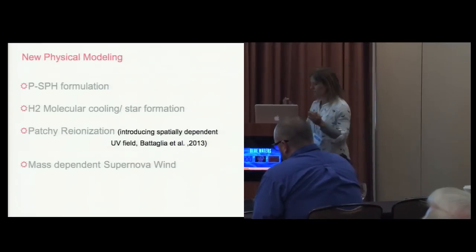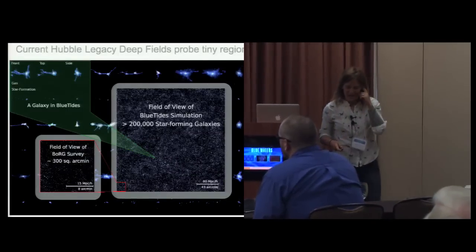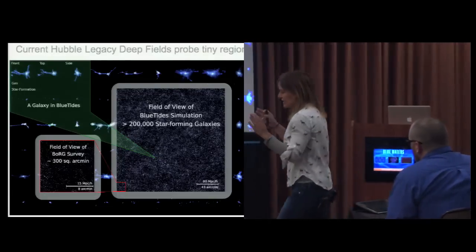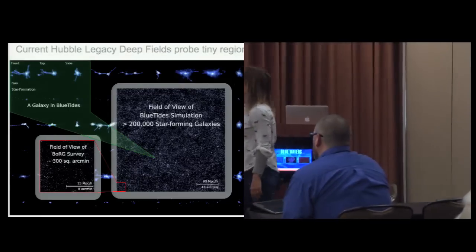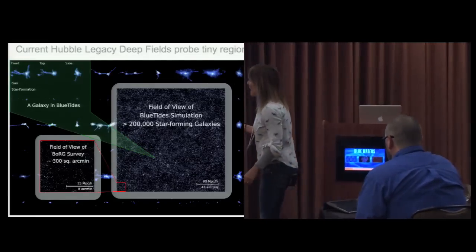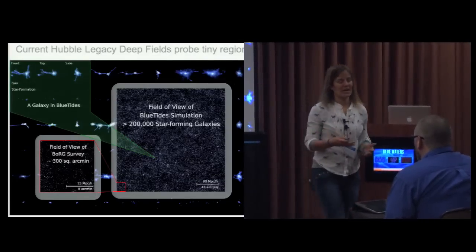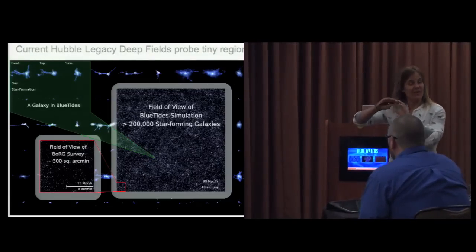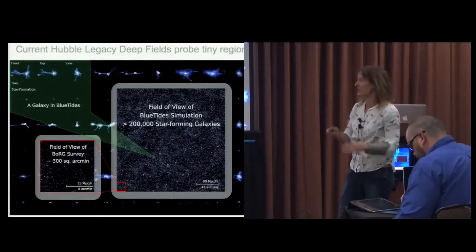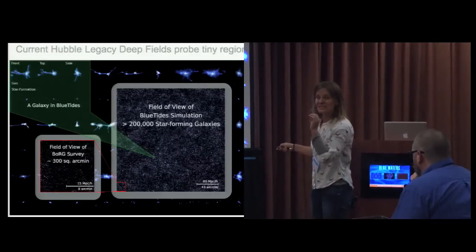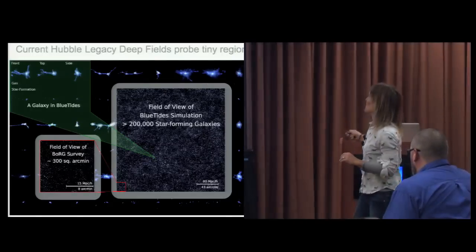To give you some sample results, one of the things that's fun with this very large volume is to look at the early universe and ask what is one of the first galaxies like that form there. This is the field of view of the BlueTides simulation compared here to what is currently observed. It's very exciting that today with the legacy fields of the Hubble Space Telescope we're starting to see galaxies at very high redshift 8 to 9 to 10, but these observations are extremely deep and in very narrow regions of the sky. This is the kind of field of view that large simulations can have.